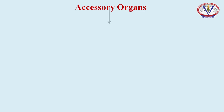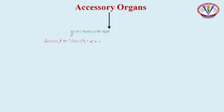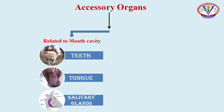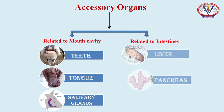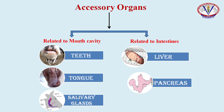The accessory organs are associated in two areas. The organs related to the mouth cavity include teeth, tongue, and the salivary glands. The liver and pancreas are accessory organs associated with the intestines.